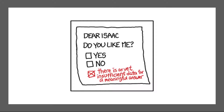For closed-ended items, it's also important to create an appropriate response scale. For categorical variables, the categories should generally be mutually exclusive and exhaustive. Mutually exclusive categories don't overlap—for example, Christian and Catholic are not mutually exclusive, but Protestant and Catholic are. Exhaustive categories cover all possible responses; Protestant and Catholic alone are not exhaustive because there are many other religious categories, such as Jewish, Hindu, and Buddhist. In many cases, it's not feasible to include every category, so an 'other' category with space for the respondent to fill in a more specific response is a good solution.